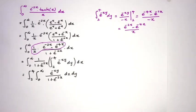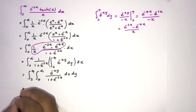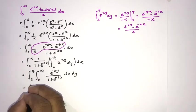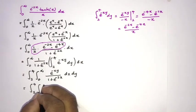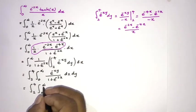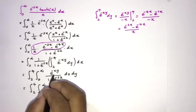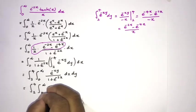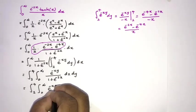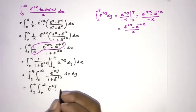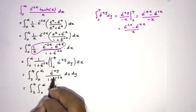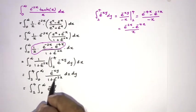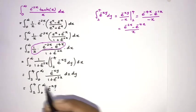As a next step, for the inner integral from 0 to infinity, we expand 1 over (1 plus e to the minus 2x) as a geometric series. Instead of this part, we substitute the series expansion.